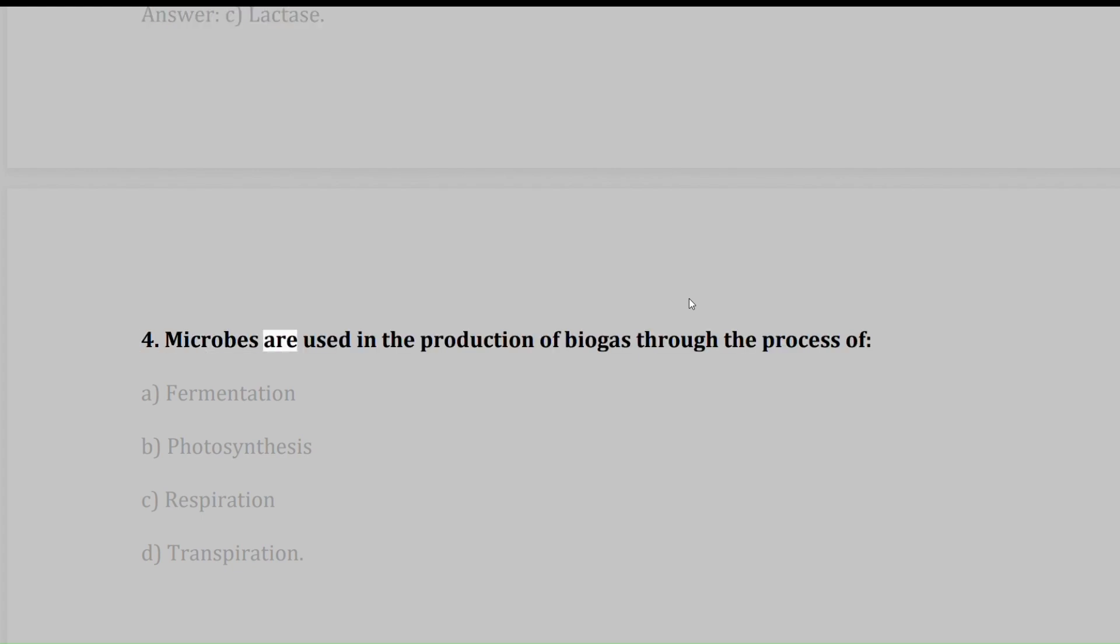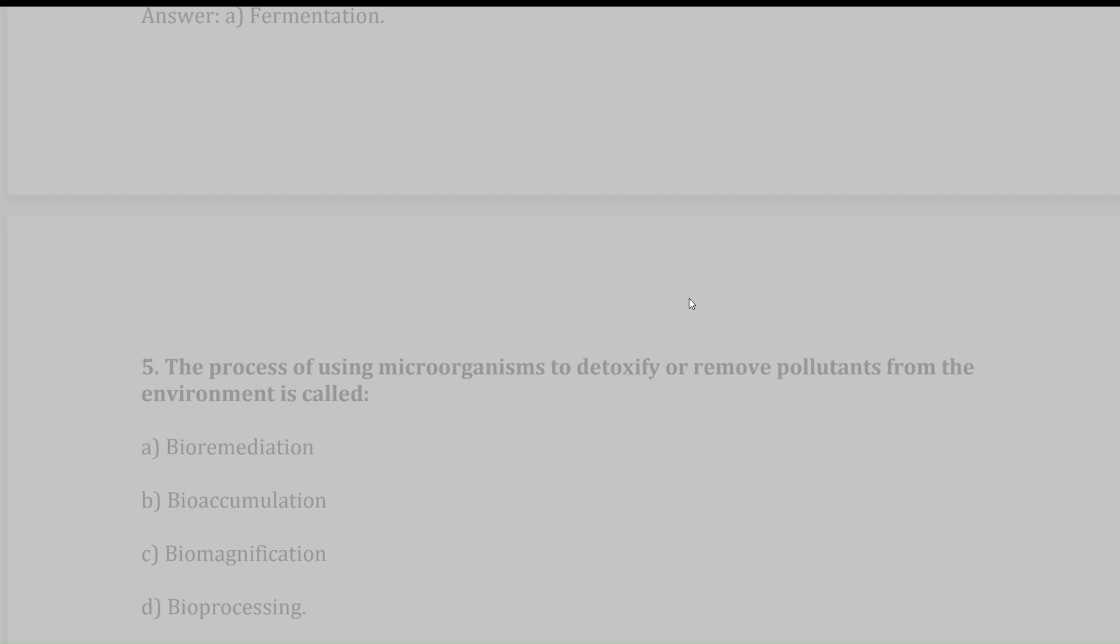4. Microbes are used in the production of biogas through the process of: A. Fermentation, B. Photosynthesis, C. Respiration, D. Transpiration. Answer: A. Fermentation.